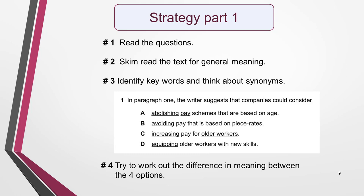After reading the questions, skim read the text to get just the general meaning. Then return to the questions and underline key words in them — these will help you find the location of the correct answer in the text. In the text, synonyms will almost certainly be used for some of them, so think about what these might be as you pick out the key words. Your other task, while looking at the answer options, is to try and work out the difference in meaning between them. Two may be very similar, but doing this will save you precious minutes in the next step.